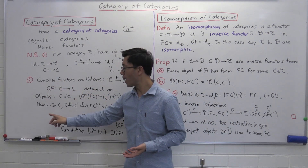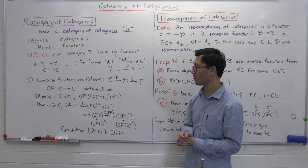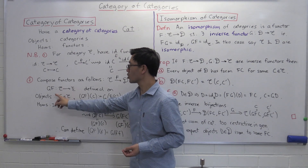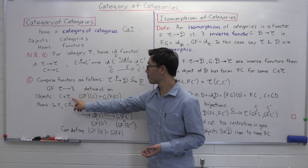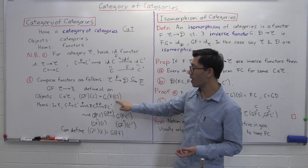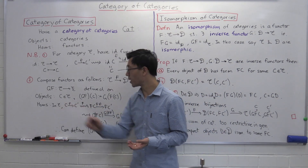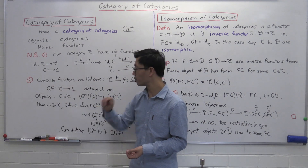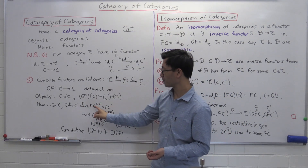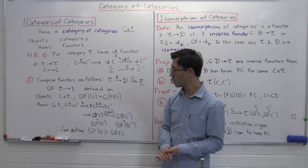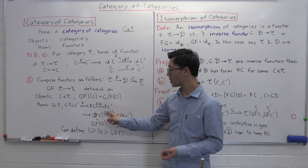We define GF on objects and on Homs and it will be clear how it respects the axioms of being a functor. On objects, suppose you have an object C — what is GF of C? You apply F to C to get an object of D, namely F of C, and then apply G to get G of F of C. That is GF of C. For Homs, suppose you have a Hom from C to C prime — call it F. Apply the first functor to get a Hom in D from FC to FC prime, that's F of F. Then apply G to get G of FC to G of FC prime, which is G of F of F.